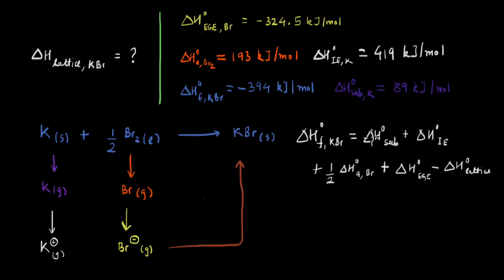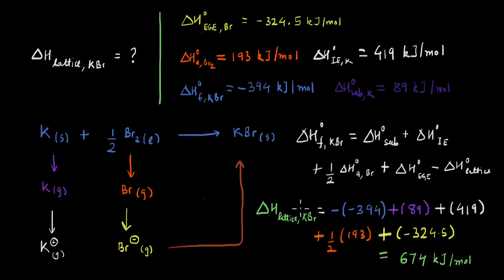And now since each of these values are given, we can just rearrange the terms of this equation to calculate the lattice enthalpy. And by plugging in the values along with their correct sign, we get the lattice enthalpy to be 674 kilojoules per mole.